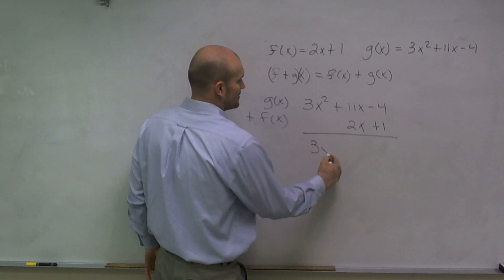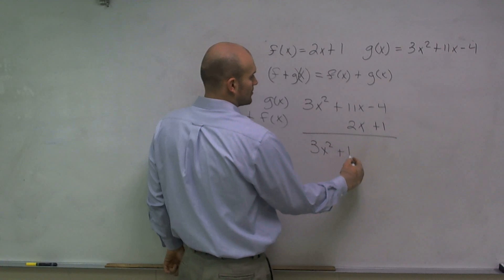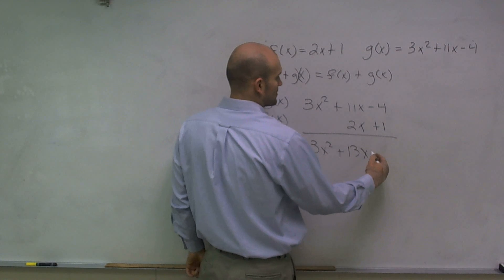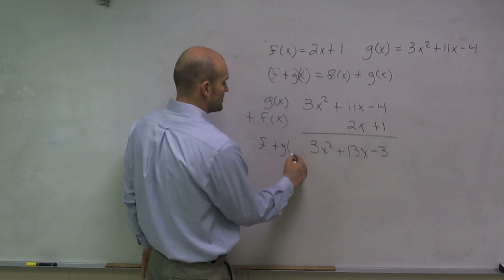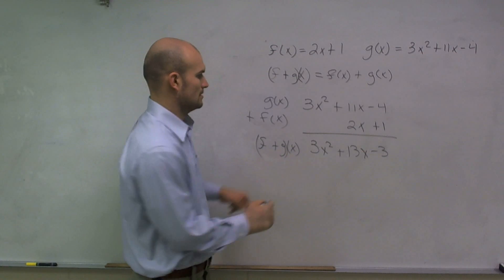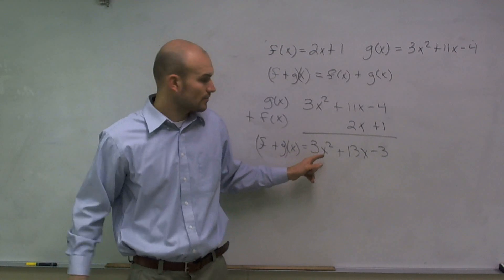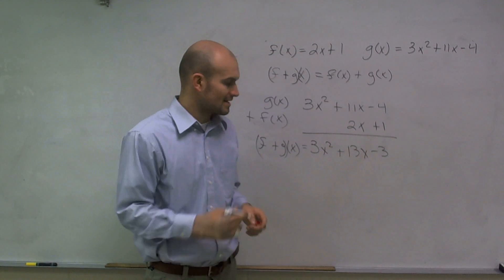Therefore, now I have 3x squared plus 13x minus 3. So I can say f plus g of x equals 3x squared plus 13x minus 3.